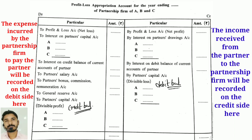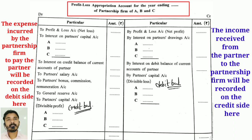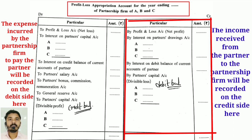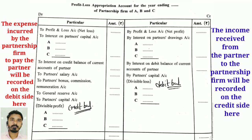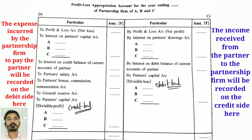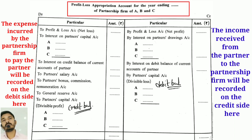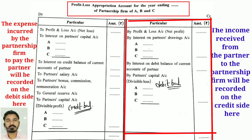By Interest on Debit Balance of Current Account of Partners. And lastly, By Partners' Capital Account — divisible loss (debit balance) — distributed among A, B, or C in their profit and loss sharing ratio.